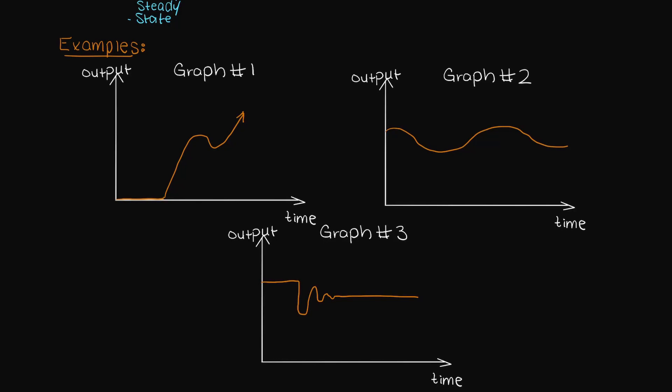In this first graph we clearly have two regions of interest. The first region is clearly steady state as our output does not fluctuate with time. However, in the second portion of the graph it is clearly changing with time and is therefore exhibiting dynamic behavior.